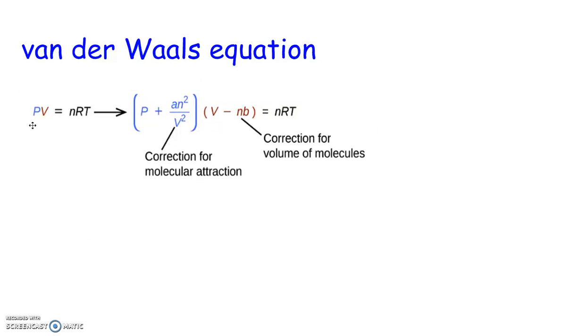The van der Waals equation takes PV equals nRT, the ideal gas law, and it makes a correction on the pressure and the volume factors of this. Because if the pressure is really high, well then the particles are close together. Or if the volume is really small, then the particles are closer together.